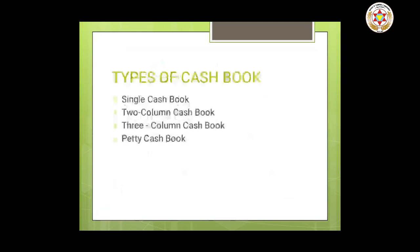The third is the three column, or triple column, cash book. It contains the following three columns: the cash column for cash received and cash paid, the discount column for discount received and discount allowed, and the bank column for money deposited and money withdrawn from the bank. One important concept here is contra entry. A three column cash book contains columns for both cash and bank transactions. Since accounting transactions involve two accounts, there may be transactions where both the cash account and the bank account are involved.